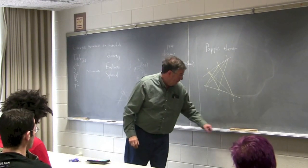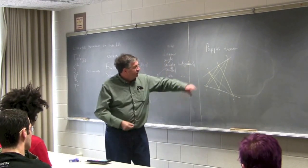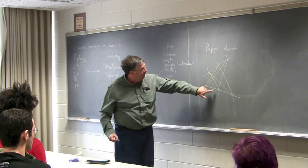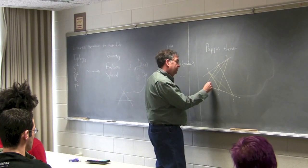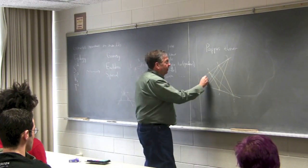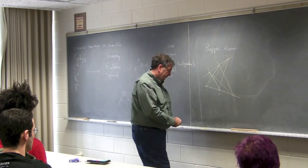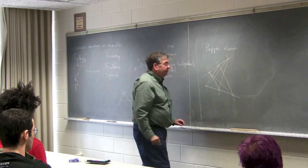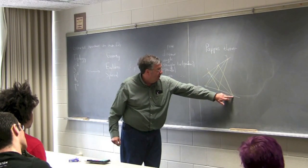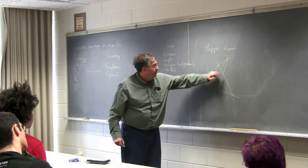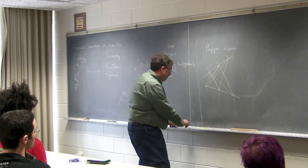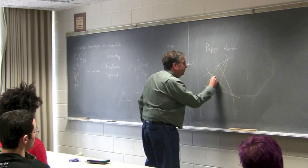Now we look at the corresponding intersections. Let's look at the pair one and two — we have this line here and this line here, and they intersect at this point here. So this is the one-two point. Let's look at the one-three points: one and three are joined here and here, and so we have another point, the one-three point.